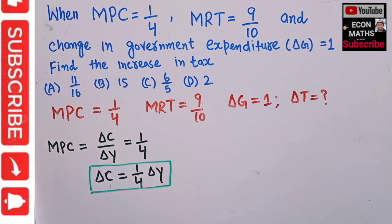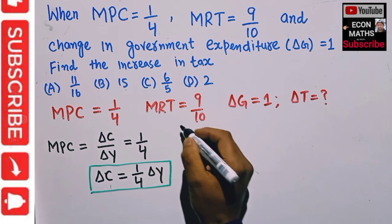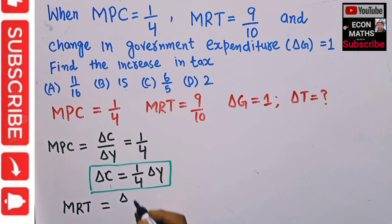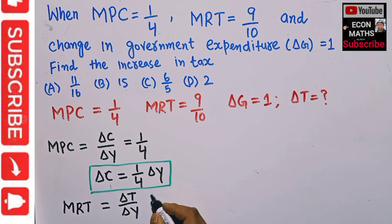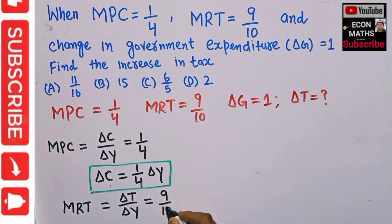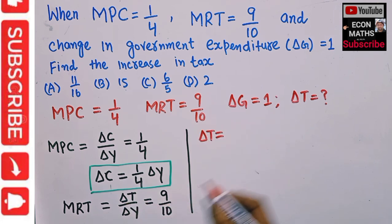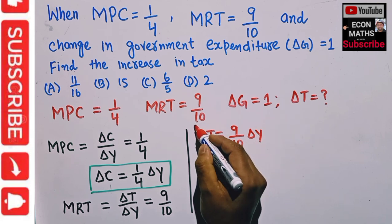We are also given the marginal rate of tax (MRT). MRT is simply equal to the change in taxes due to the change in income. A change in tax due to additional increase in income is the marginal rate of tax, given as 9/10. Solving for T: ΔT = (9/10) × ΔY.